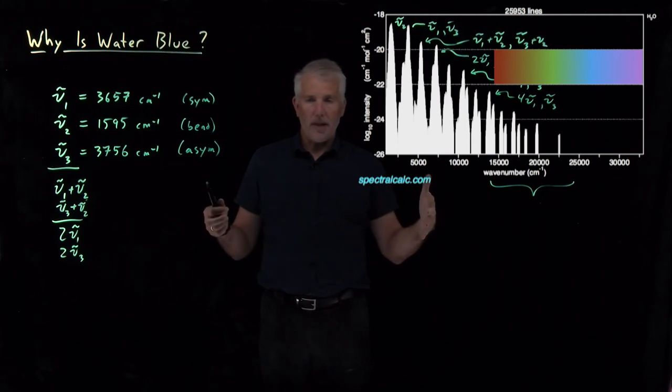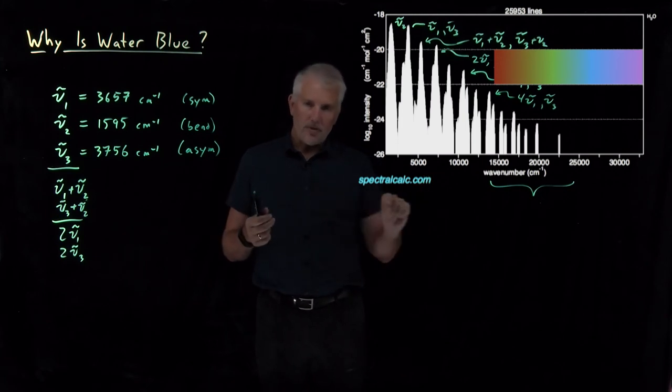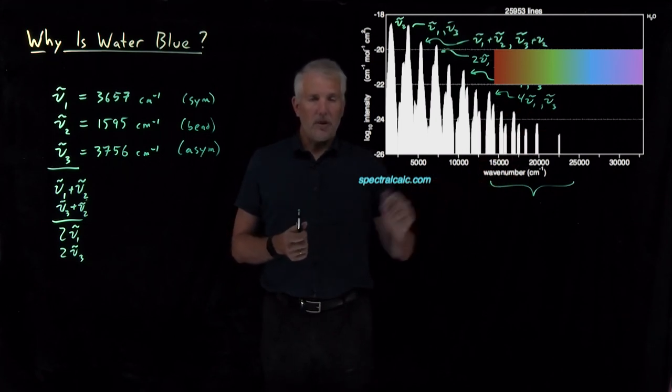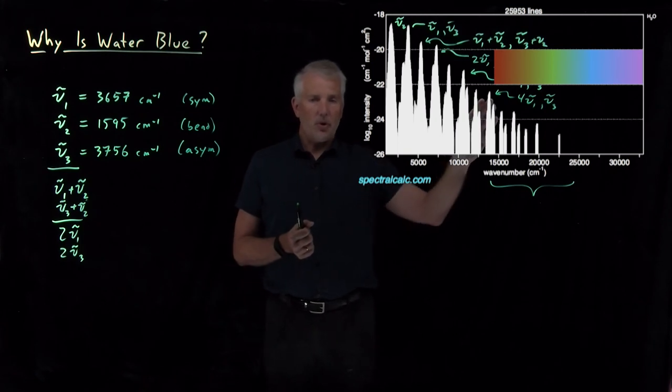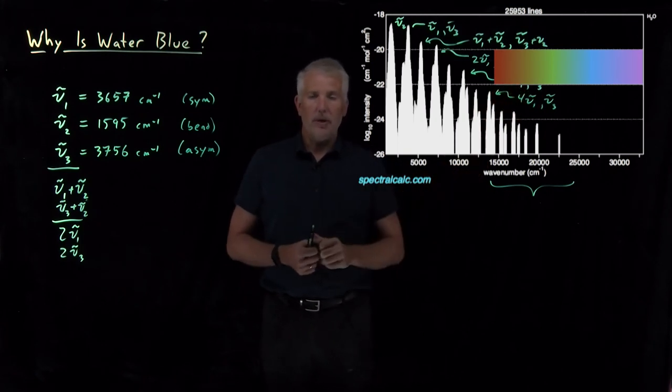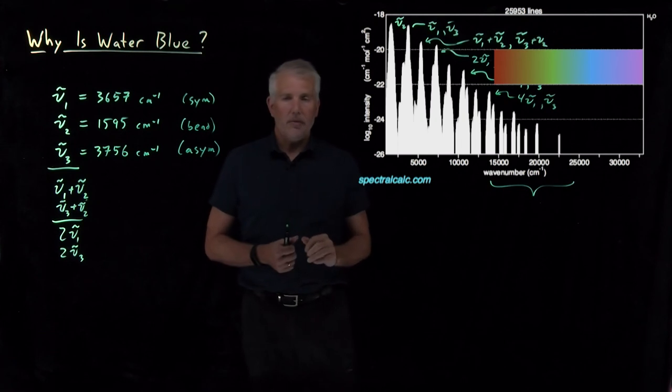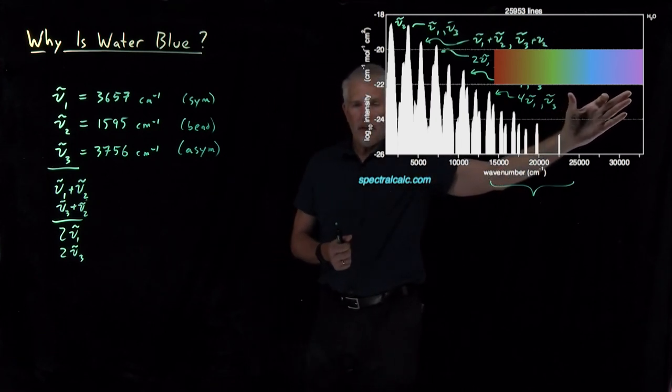So, what that means is, if I have a large enough body of water that the photon can pass through quite a bit of the water, some of those photons will be absorbed, but if I pass through enough molecules to eventually absorb most of the red, orange, yellow, green parts of the spectrum, then the part of the light that's left over after that absorption is blue.